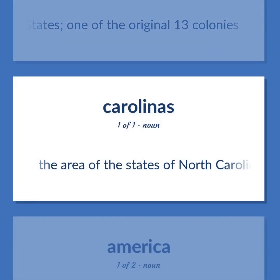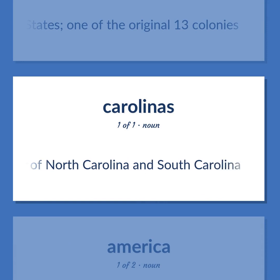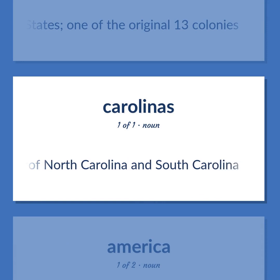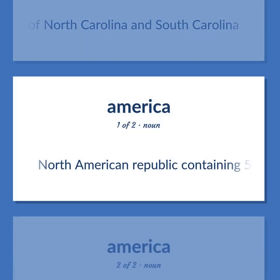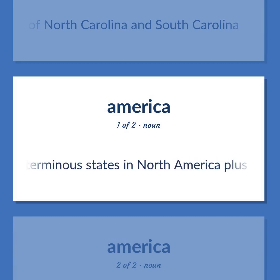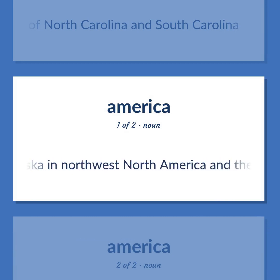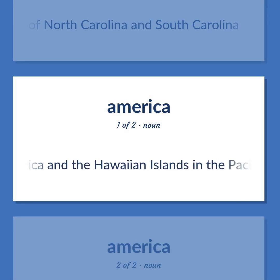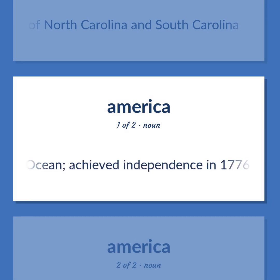The area of the states of North Carolina and South Carolina. North American Republic containing 50 states — 48 contiguous states in North America plus Alaska in northwest North America and the Hawaiian Islands in the Pacific Ocean. Achieved independence in 1776.